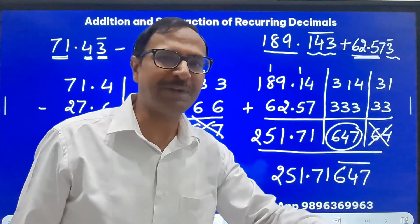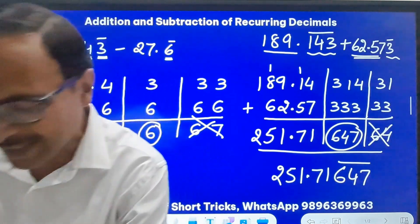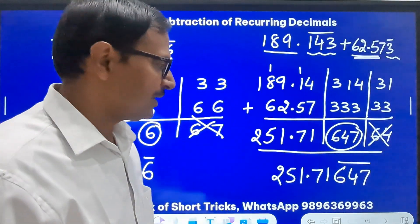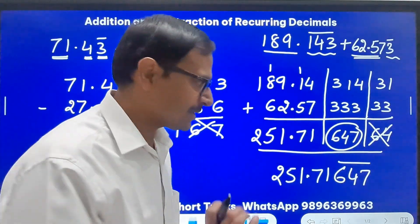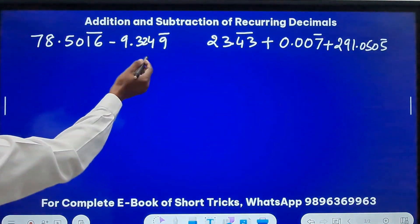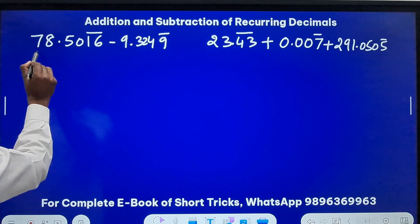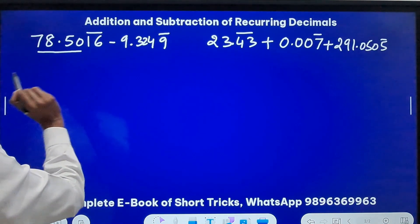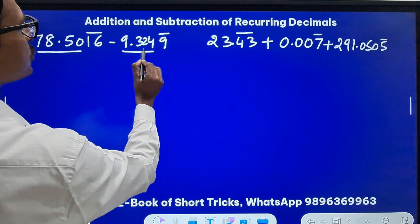Pick up the calculators and check this problem will have the sum 251.71647647647 and so on. Now that's how it works and this is the shortest method for this. Now I'll take two more questions.